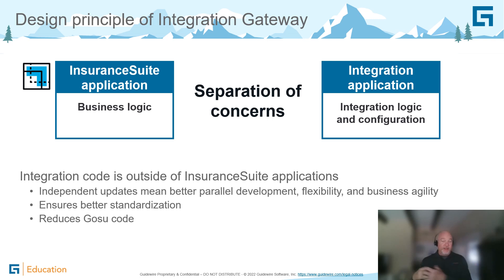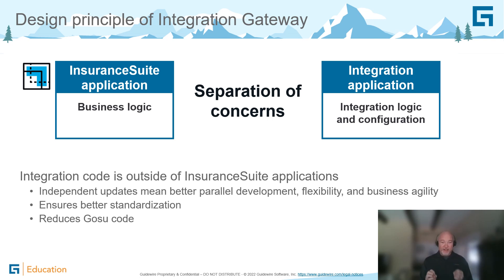This can be things such as point-to-point integrations or publish and subscribe. This architecture allows for a number of different things. By being independent, each track can be performed independently, tested independently, and deployed independently. This provides greater flexibility and business agility.